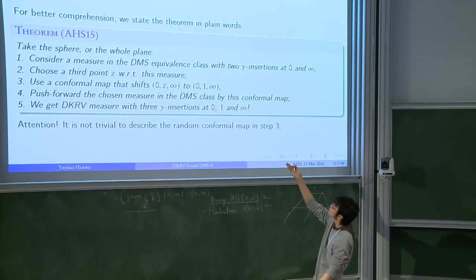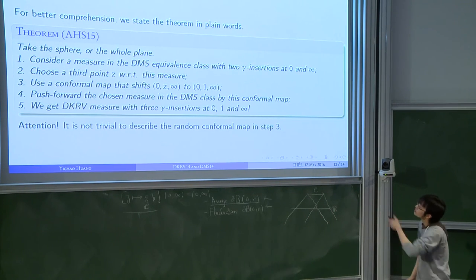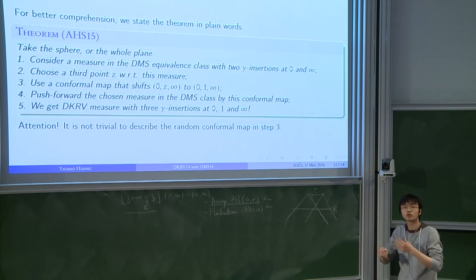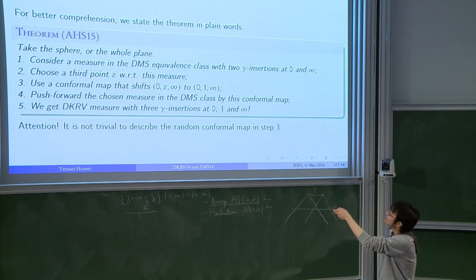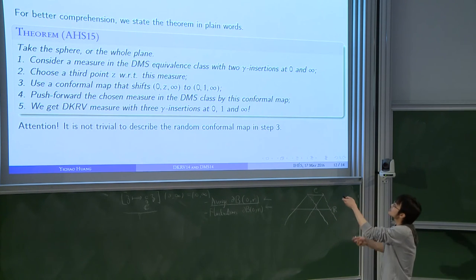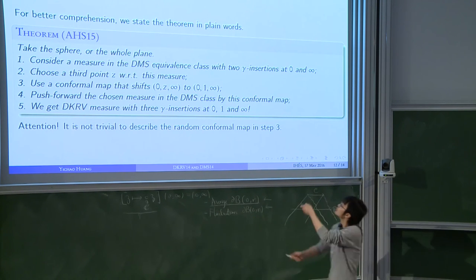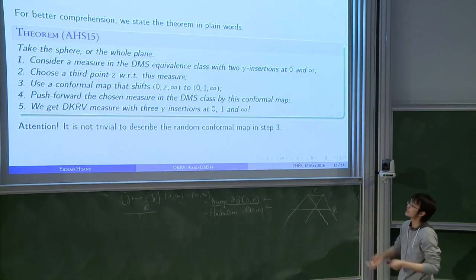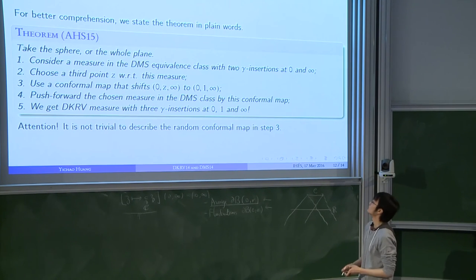So what we do is that we take a measure in the equivalence class of two points. We'll pick a third point according to this measure. It's like as if you're picking a third point uniformly among all vertices. But this will give you something that is still in the equivalence class. If you want to pass to a measure, we must use this kind of push-forward operation to fix these three points. We'll fix it to zero, one, and infinity. You push forward your measure by this action, and you should get the measure with three points.